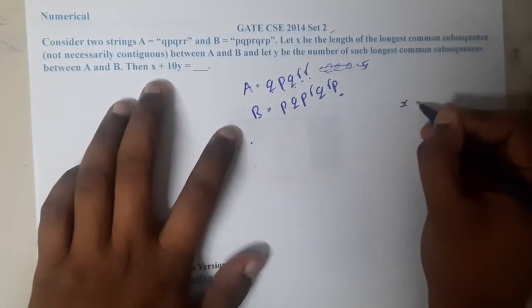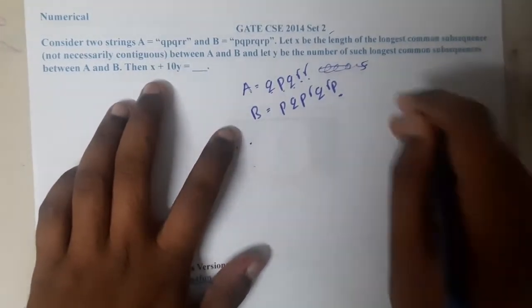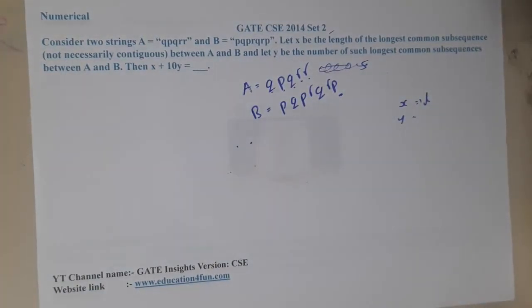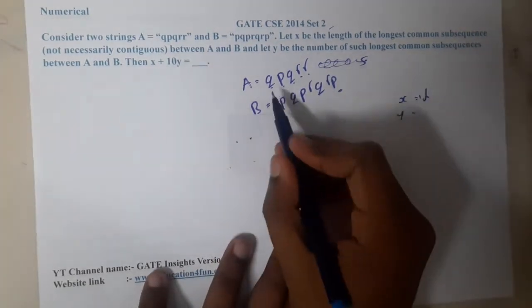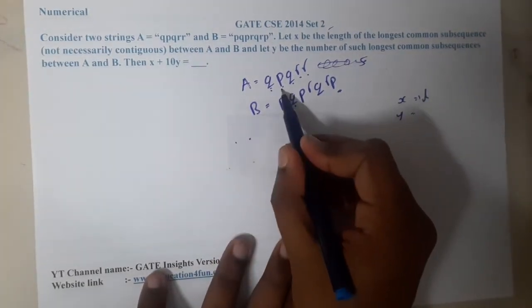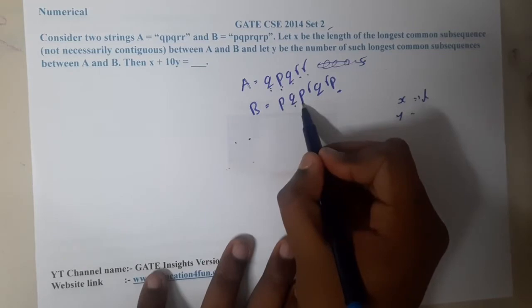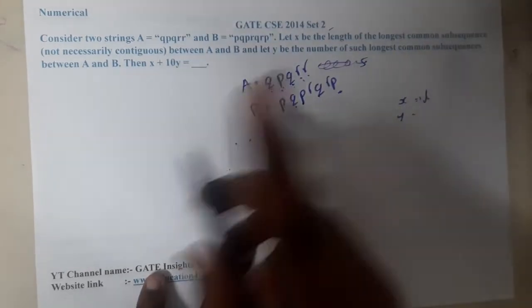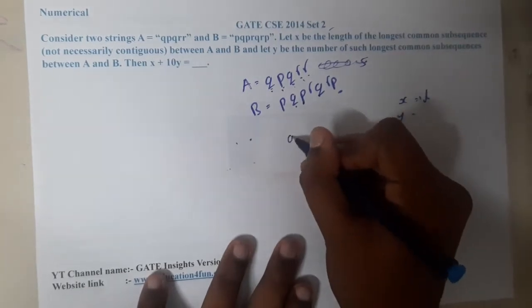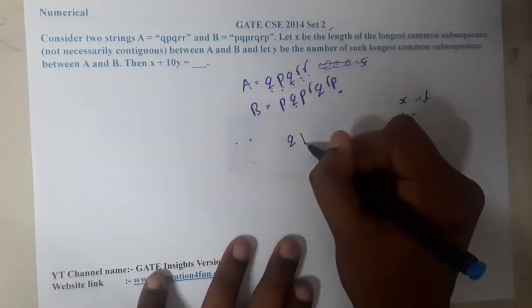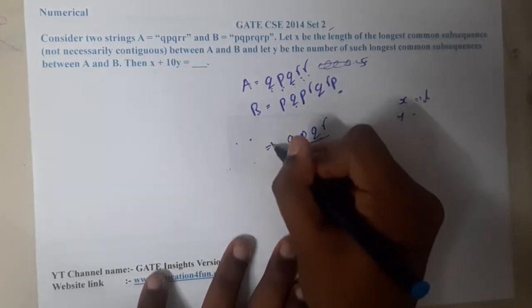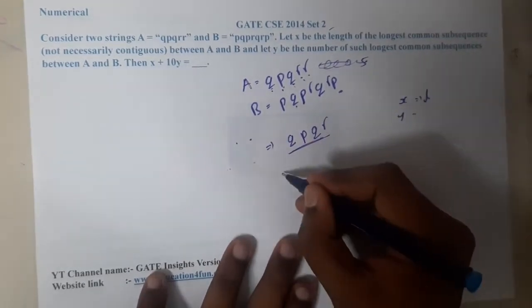I think without even using the longest subsequence concept we can try. Let us try. Here we are having q, here we are having p, q is there, one r is there. I got one pattern here: q p q r. This is one pattern which I found.